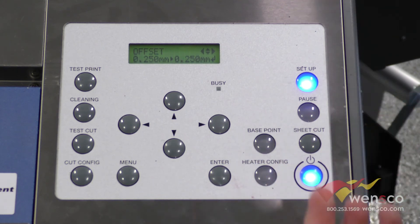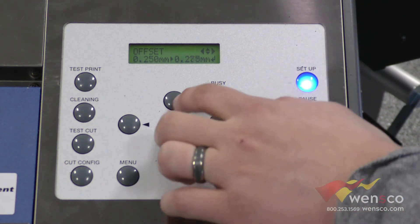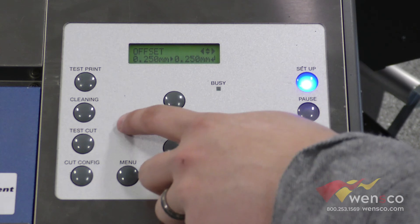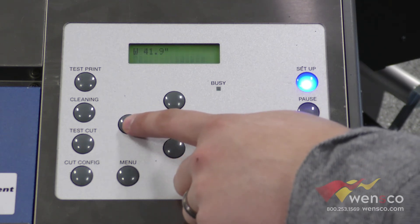The other one is offset. This is set with the blade that you put into the machine, so you shouldn't have to change this unless you go to a different blade, in which case you can go in here and manually change it as well. But that's all the options in the cut configuration menu.